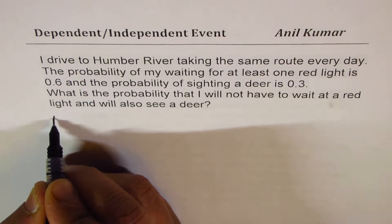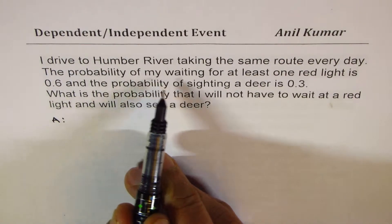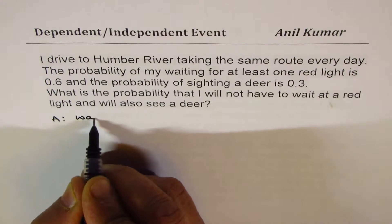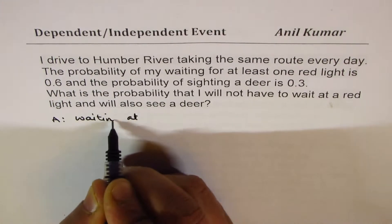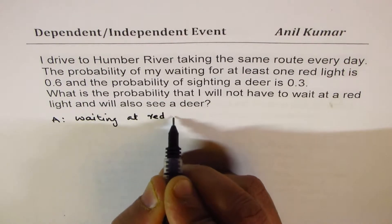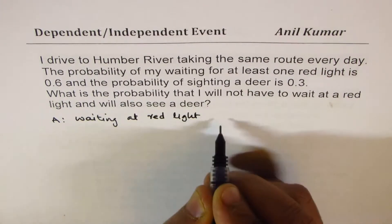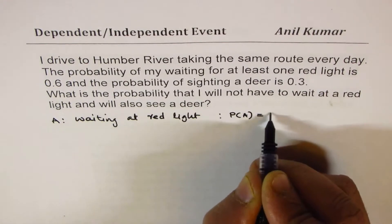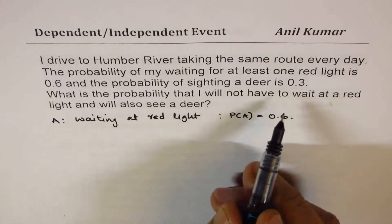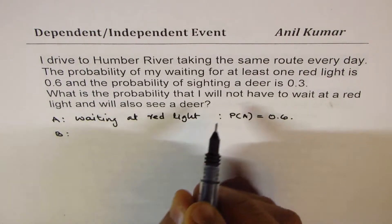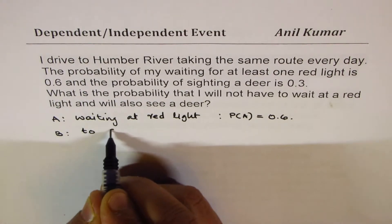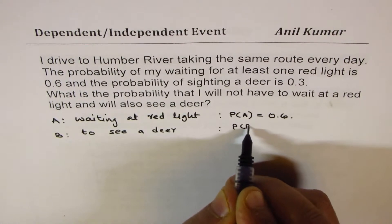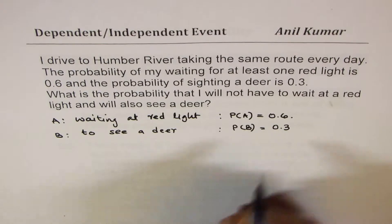Now here, let's define event A as waiting at a red light. The probability of this event is given to us as 0.6. The other event, let it be B, and that is to see a deer. The probability of the second event is given to us as 0.3.